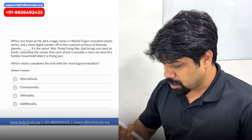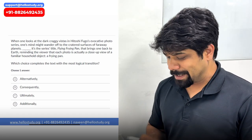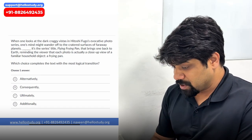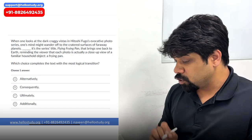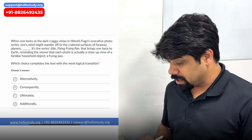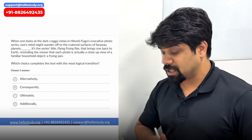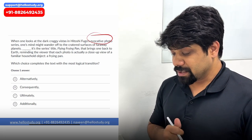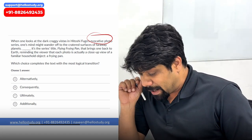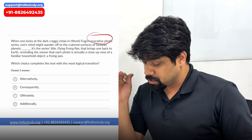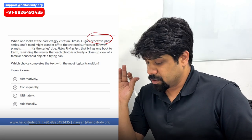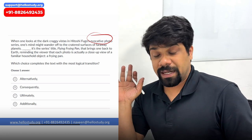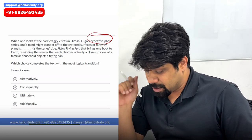You can pause your screen and attempt this question, then we'll see what the right answer should be. The first question says: when one looks at the dark, craggy vistas in Hitoshi Fugo's evocative photo series, one's mind might wander off to creative surfaces of far-away planets. So it seems that these pictures are of far-away planets.